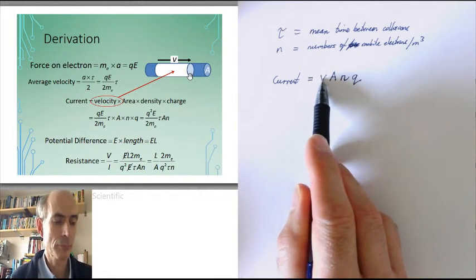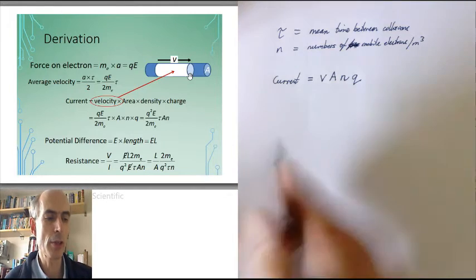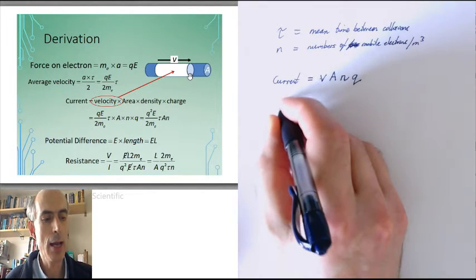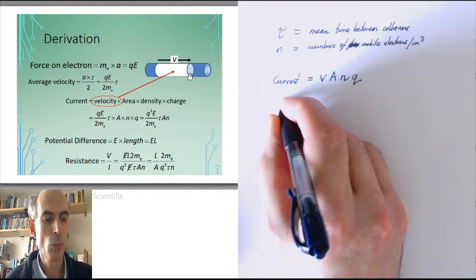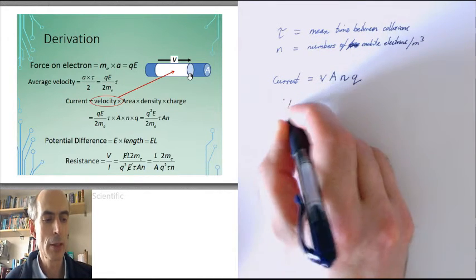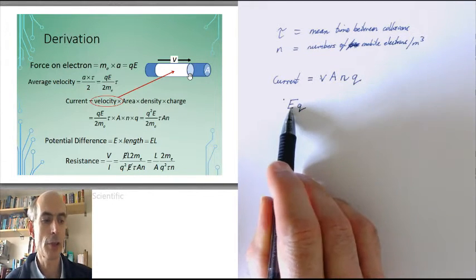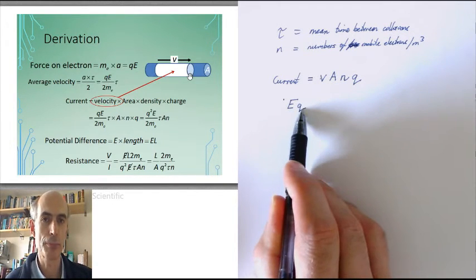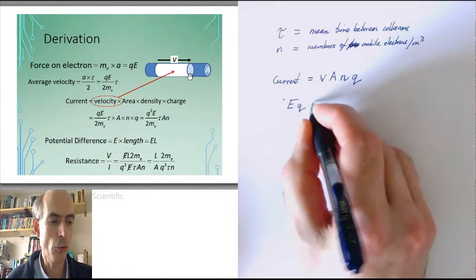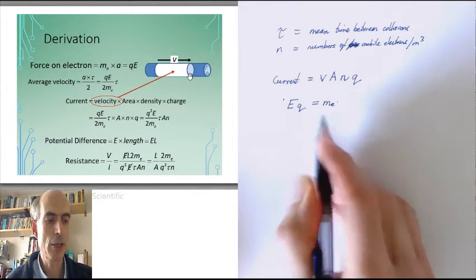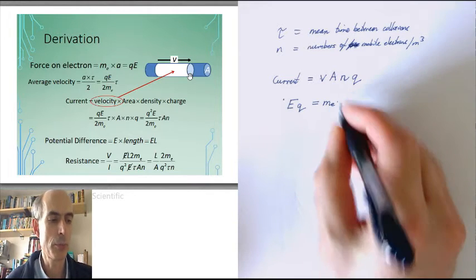Now, what's the velocity? Well, consider these electrons. These electrons in an electric field will experience a force on them given by E times q. The electric field strength times the charge gives you the force. The force is also equal to the mass times the acceleration. In this case, the mass of an electron times the acceleration.